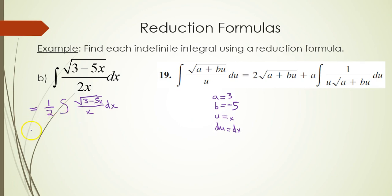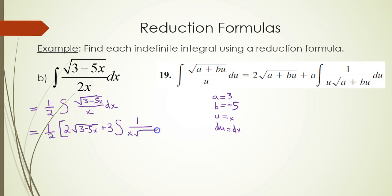We can now apply integration formula 19. We have a half, and then the integral gives 2 times the square root of a plus bu — that's the square root of 3 minus 5x — plus a, which is 3, times the integral of 1 over x times the square root of 3 minus 5x, dx. Distributing the half into the brackets: a half times 2 gives 1, leaving the square root of 3 minus 5x, plus 3 over 2 times the remaining integral.